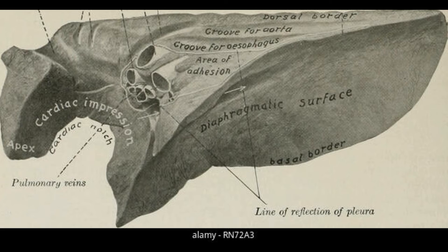The esophageal impression allows the passage of the esophagus, while the aortic impression allows the passage of the aorta. The aortic impression is present dorsal to the esophageal impression. Just above or dorsal to the hilum is the esophageal impression, and then dorsal to that is the aortic impression. A third impression is the caval impression, present beneath the accessory lobe in horse, and it is for the caudal vena cava in the right lung.